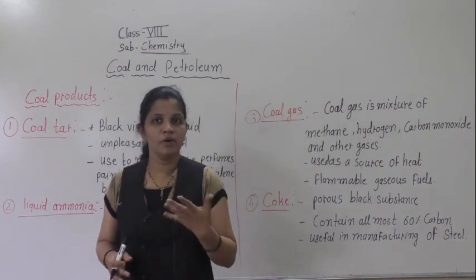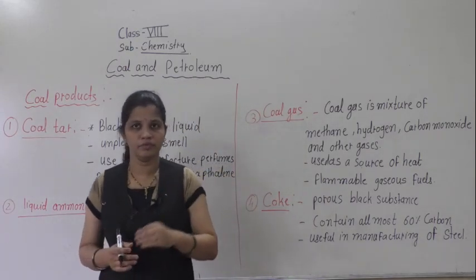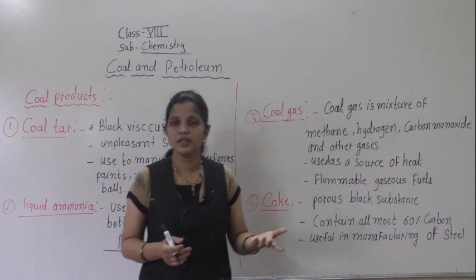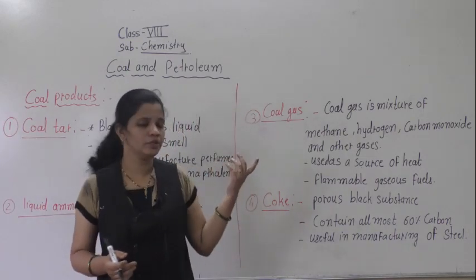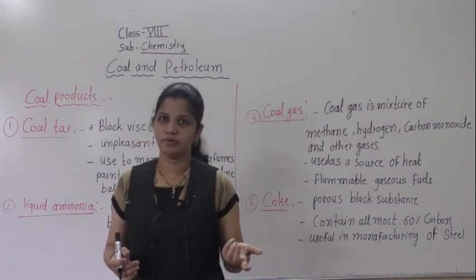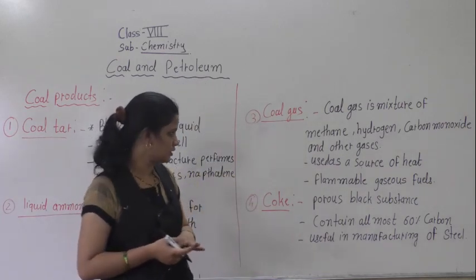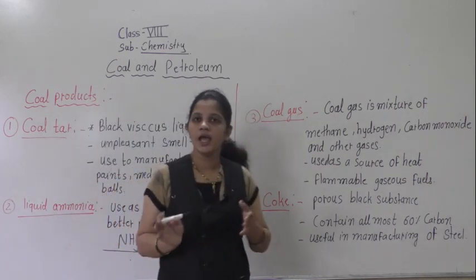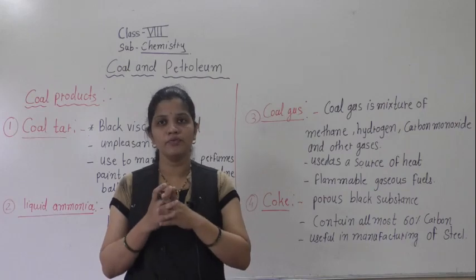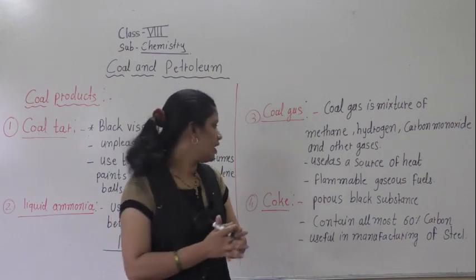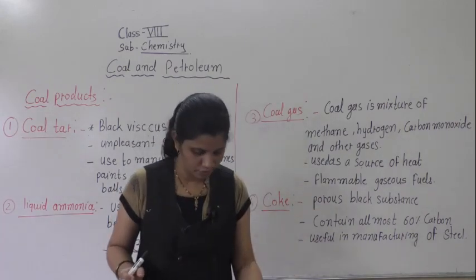So what do you know about coal gas? Coal gas is a mixture of different gases like methane, hydrogen, carbon monoxide, and very small amounts of other gases. It is also used as a source of heat and it is a flammable gaseous fuel.